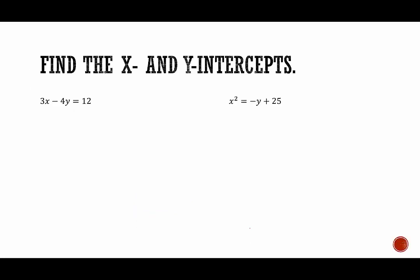In our first two examples, we have one linear equation — 3x minus 4y equals 12 — and one quadratic equation: x squared equals negative y plus 25. To find the x-intercept of the linear equation, we will set y equal to 0. That would be 3x minus 4 times 0 equals 12, which gives us 3x equals 12. Dividing both sides by 3, we get x equals 4. So we write the x-intercept as (4, 0).